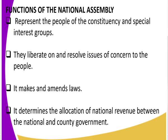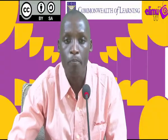They also deliberate on and resolve issues of concern to the people. For example, members of parliament from western constituencies took the issue of Mumias to the National Assembly to be discussed — so they deliberate and solve issues concerning the people. They also make and amend laws. This is the law-making arm of the government, so they get to make and amend laws.